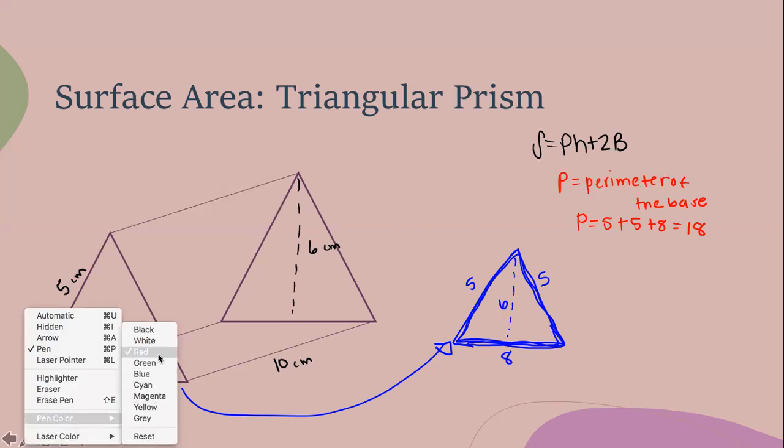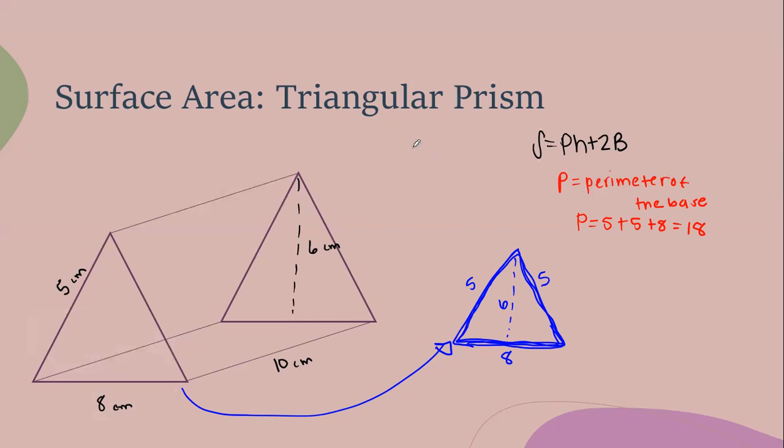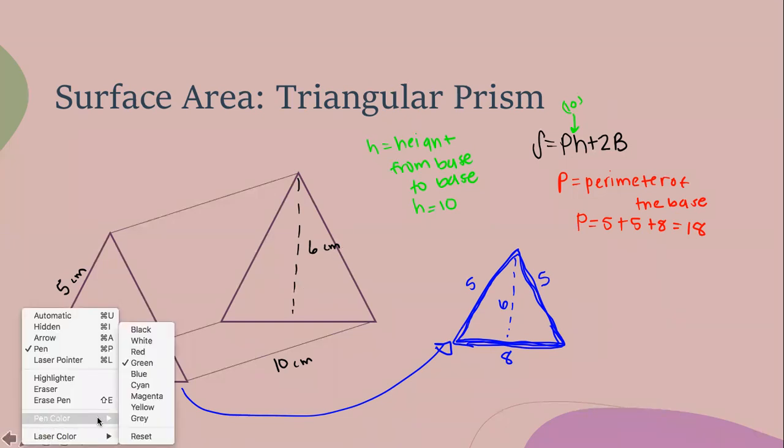All right, this is the part where it trips people up. That H value. Remember, H is the height from base to base, from triangle to triangle. So what is the height? The height is 10. So just remember, this height right here has nothing to do with the base. It's the number that's not being used. So my height is 10, because that's how tall the prism is. If I think of it as it's on its side right now, and I would flip it over to make it on where it's supposed to be.